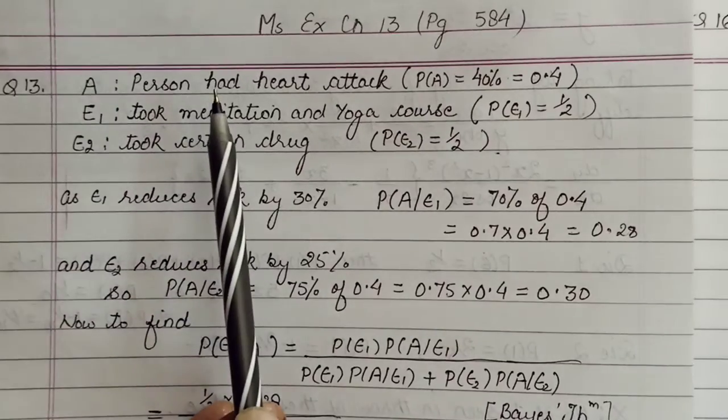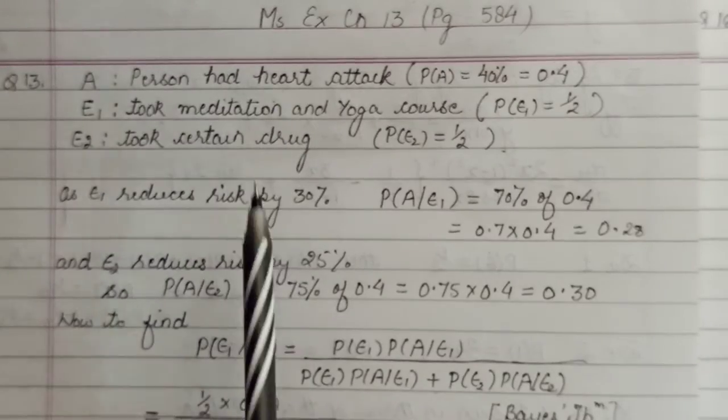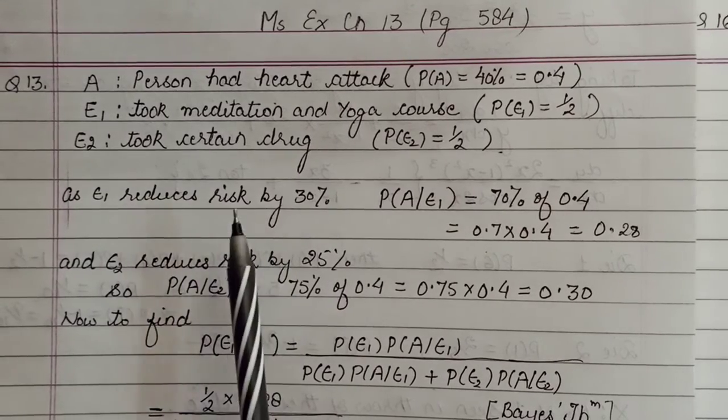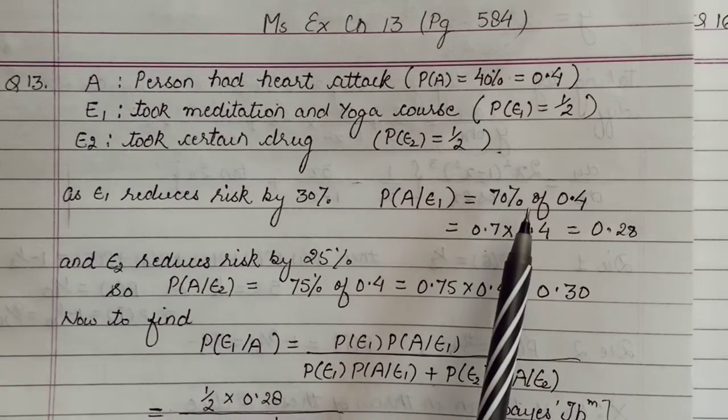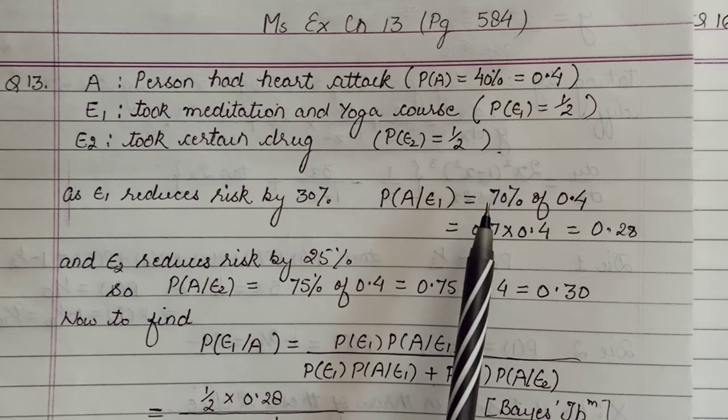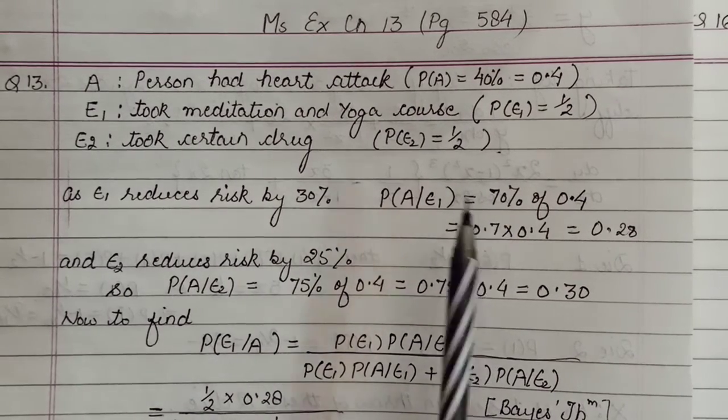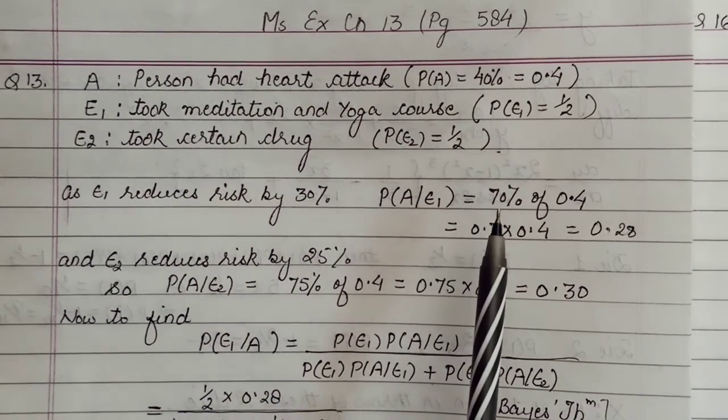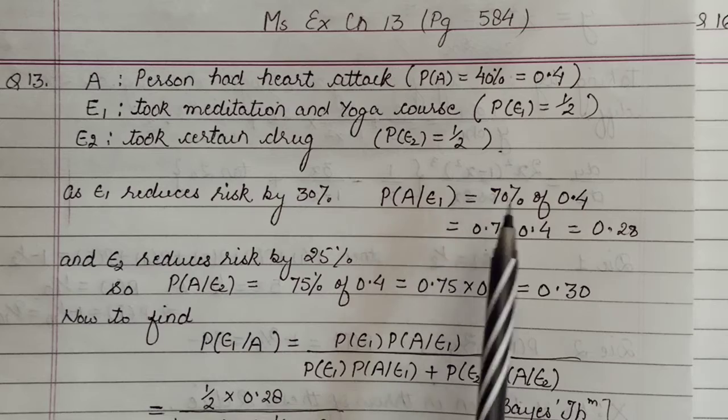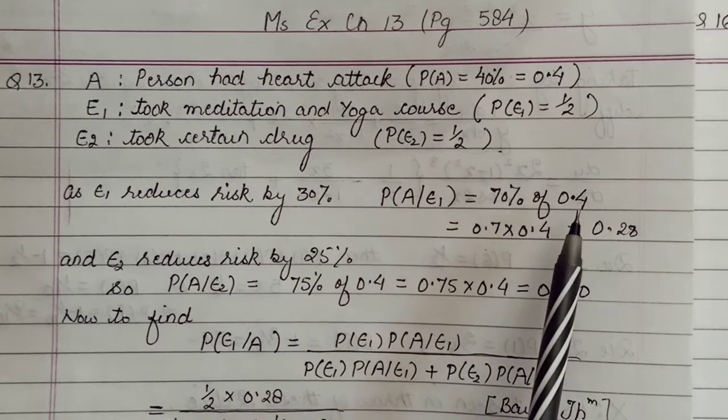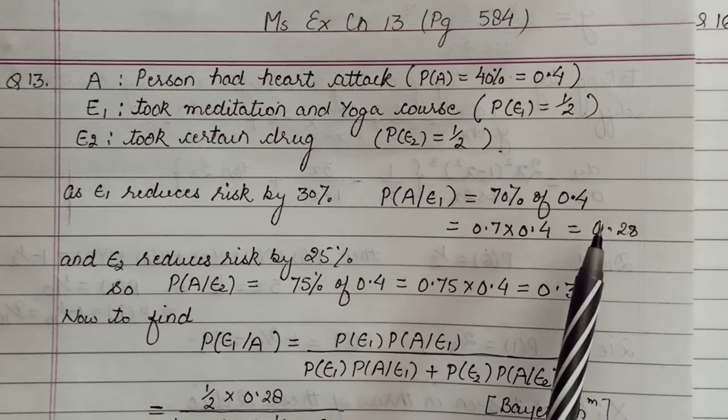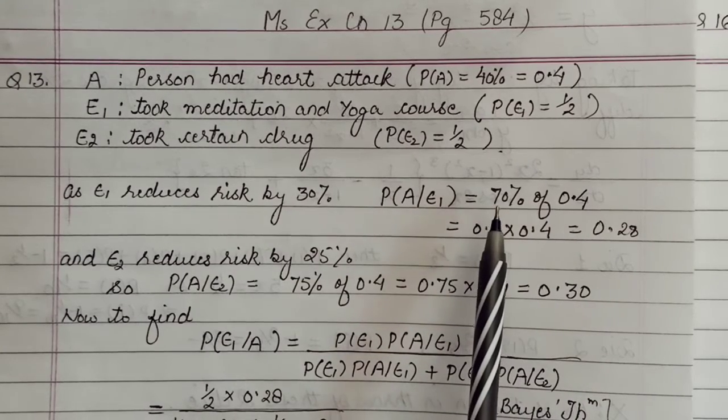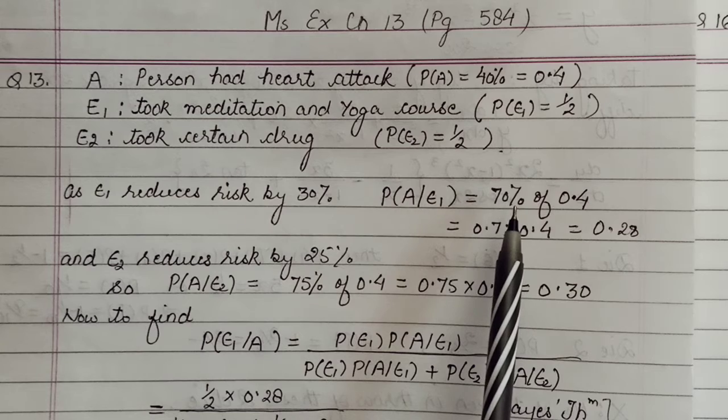Now E1 - it has been said that E1 reduces the risk by 30 percent, alright. So it's reducing, but we're talking about heart attack occurring. So if 30 percent is reduced, then leftover would be 100 minus 30 = 70 percent. That means 70 percent probability that heart attack occurred in spite of meditation, right. But 70 percent of what? 70 percent of people who have heart attack - not the whole population. Those who had heart attack, that's 40 percent.